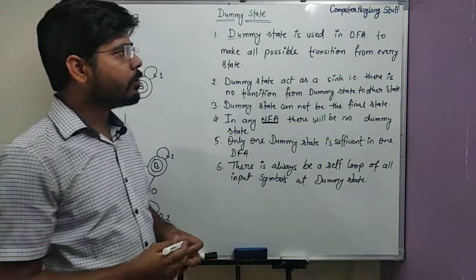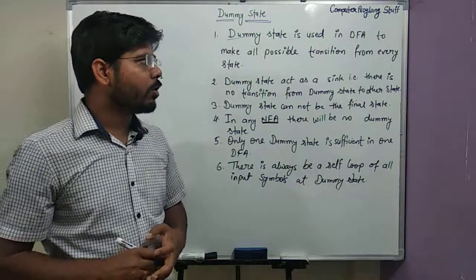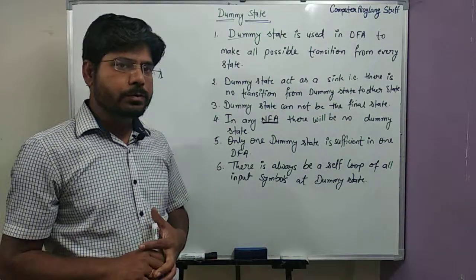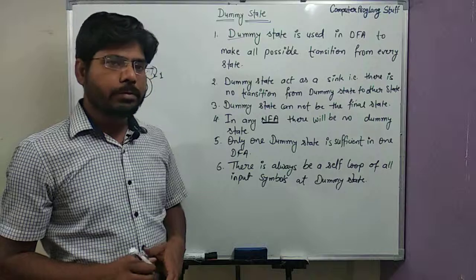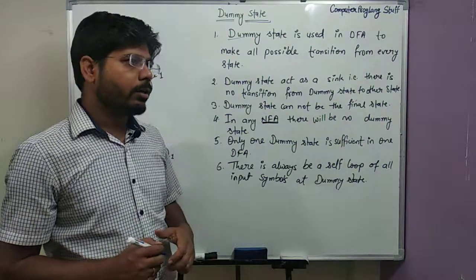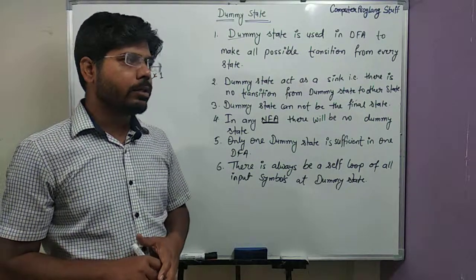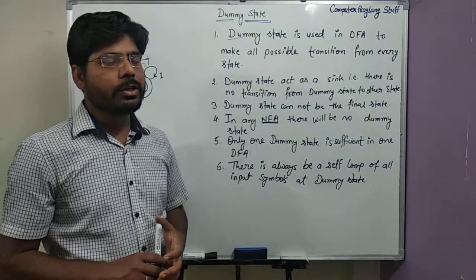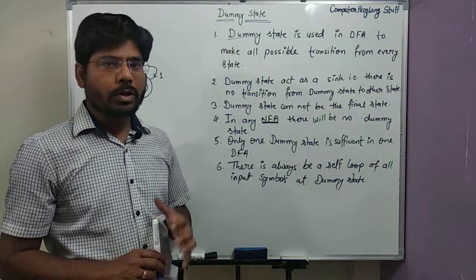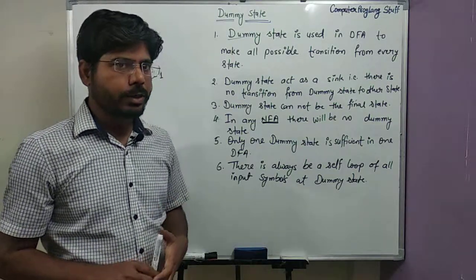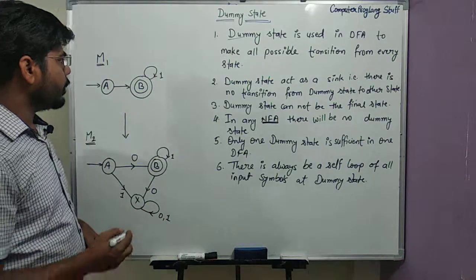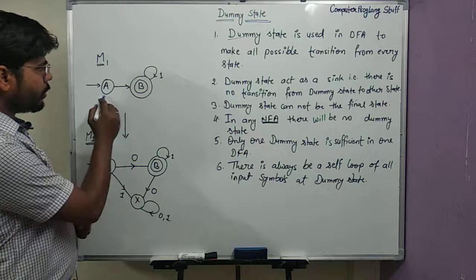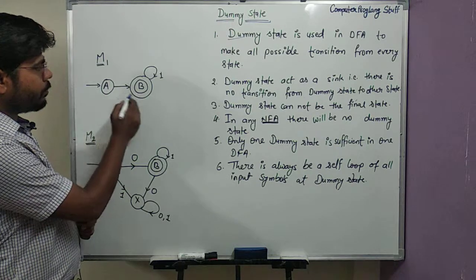A dummy state is used in a DFA to make all possible transitions from every state. Sometimes what happens is that a machine is not a complete DFA unless there is a transition for all the symbols from every state. For example, let's say we have a state A and from A to B we have a transition of 0.